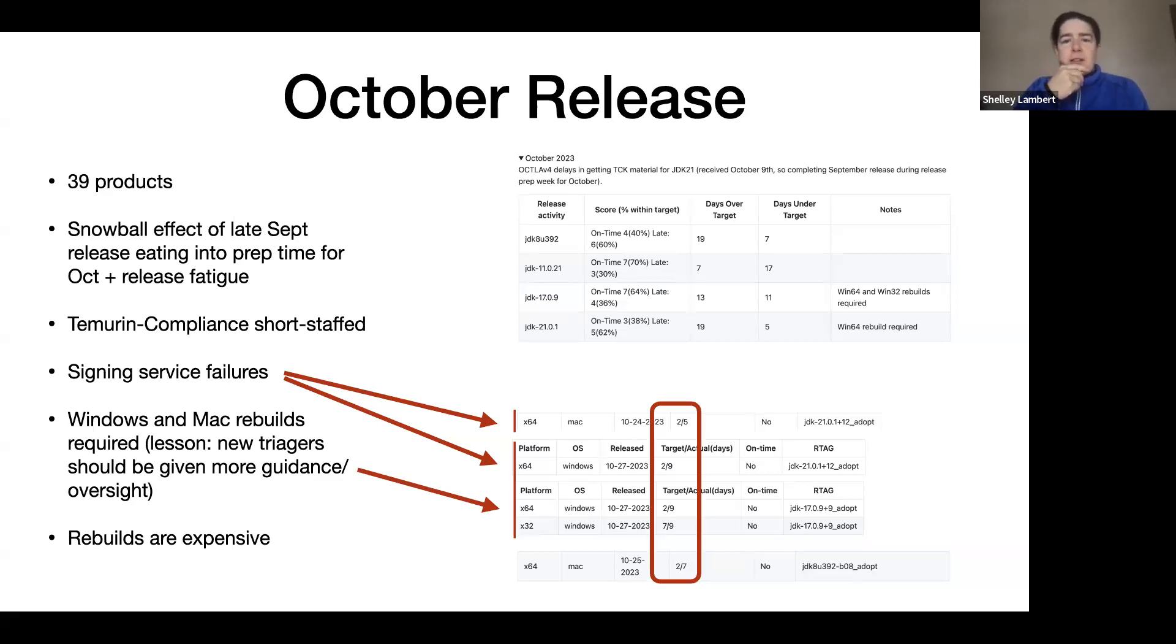As a kind of a first look from a very big distance away, some of the challenges that came for us in the October release: I think the snowball effect of the late September release that was eating into the prep time for October, plus when you do two releases so close together the teams that are working on this release really suffer from release fatigue. As we go into October release, the Temurin compliance project was slightly short-staffed. I know we certainly would have missed Scott, who presented at his first conference in EclipseCon and Java Community Day, but also was a very probably missing body out of that Temurin compliance group.